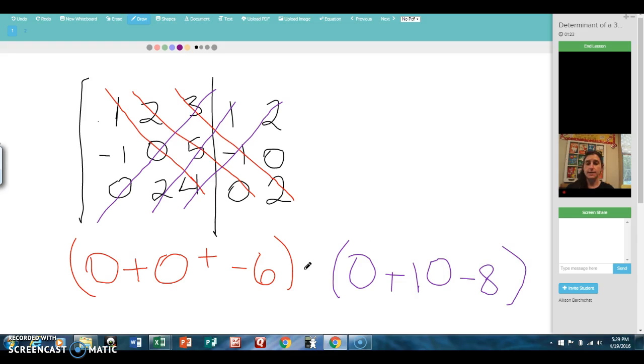What we do with these guys is subtract them. So I've got negative 6 minus, let's see, 10 minus 8 is 2. So negative 6 minus 2 is negative 8. So my determinant is negative 8.